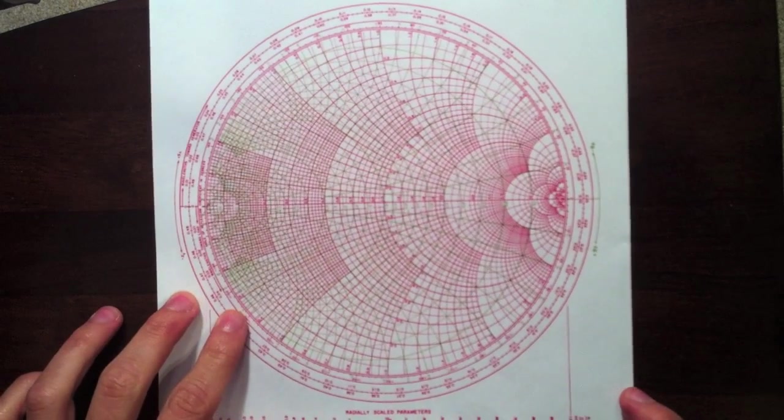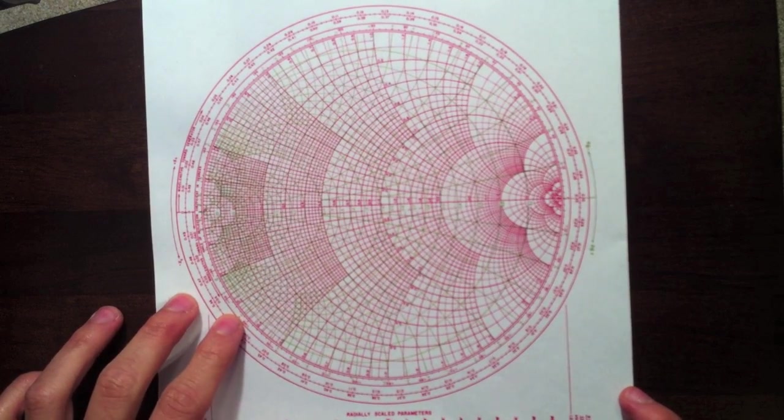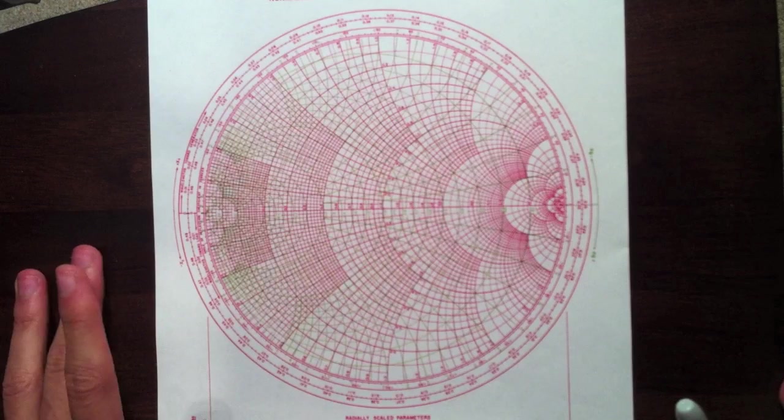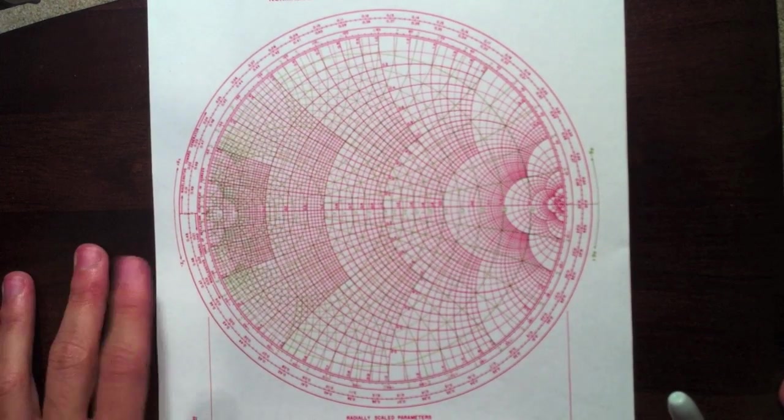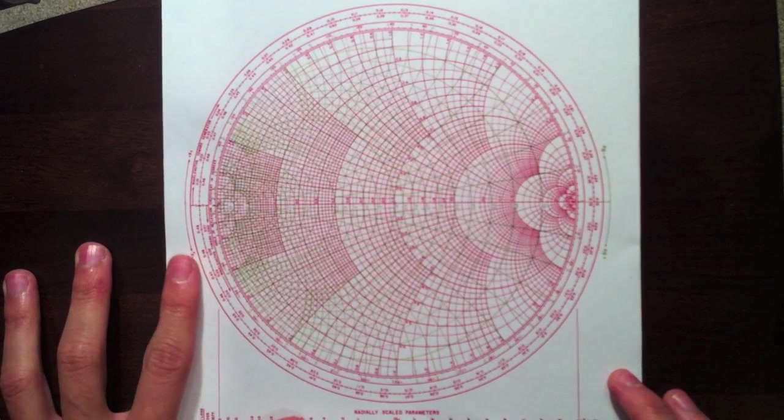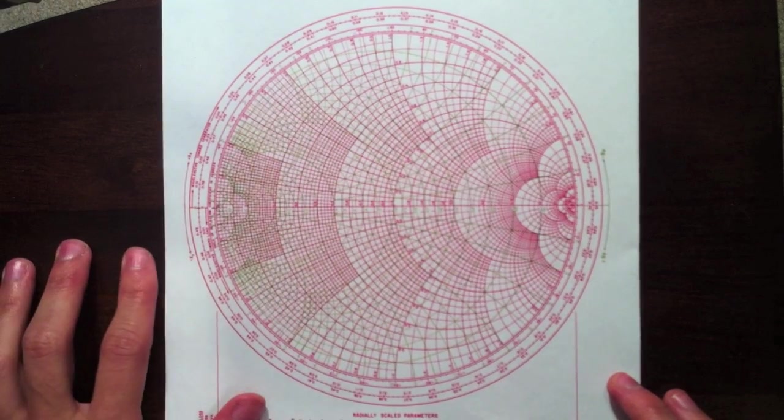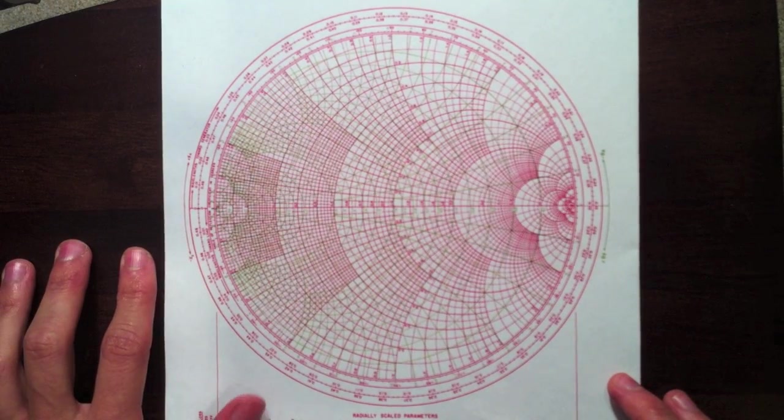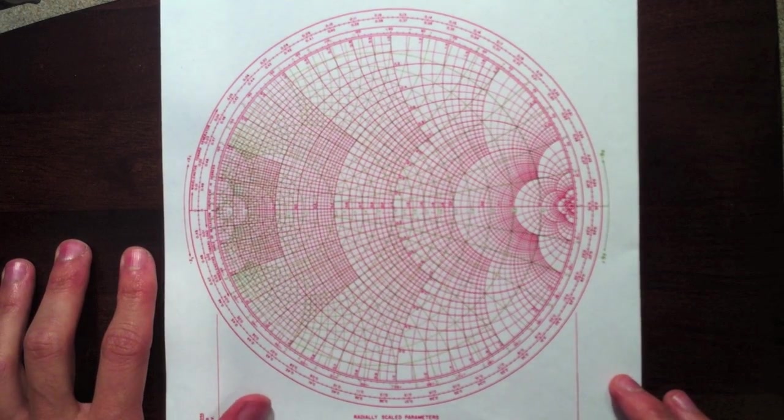So here is your standard Smith chart. It's actually a more complicated one known as an admittance chart. We'll talk about that in a little bit, but basically this looks like a complicated monstrosity of a plot, but it's actually very useful in antenna theory.